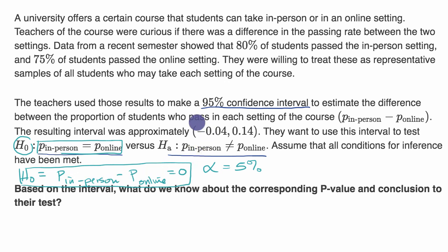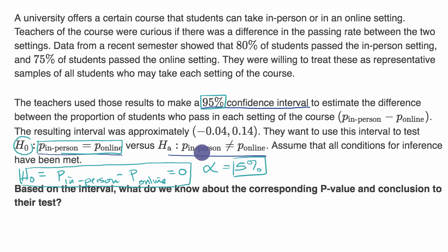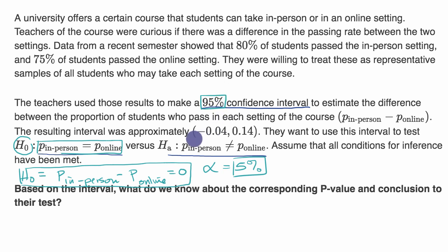Here we have something interesting: a confidence interval. It turns out that if the sum of your confidence level and your significance level equals 100%, and you're doing a two-sided hypothesis test — where the alternative hypothesis is that the proportions are different, not just greater than or less than — you can make inferences about your p-value from your confidence interval.